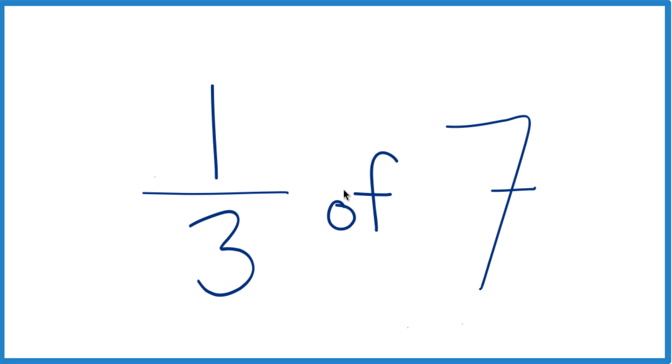It's helpful, instead of calling this of, we could also just call it multiplication. So one-third of seven, that's the same as one-third times seven.